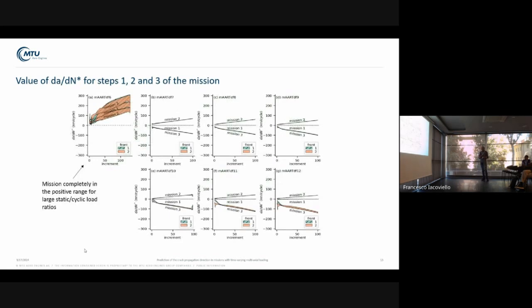If you analyze these tests, you see that for the test with the high static loading, the mission, which in this case consists of three steps, is characterized by K values and dA/dN star values which are completely in the positive range. Whereas for the other tests, we have a mixture.